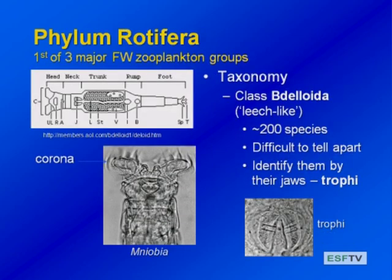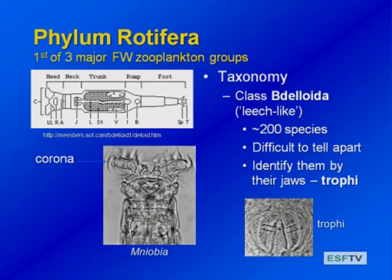Let's go on to one of the three major groups of zooplankton in fresh waters. There are three primary groups that comprise most of the zooplankton: the rotifers, the copepods, and the cladocerans. Copepods and cladocerans are types of crustaceans — they're arthropods — and rotifers are a separate phylum. We'll discuss these three major groups in detail because this is going to comprise well over 90%, often 100%, of what you're going to find in most zooplankton tows.